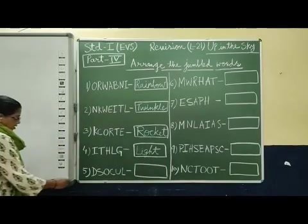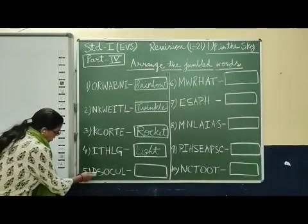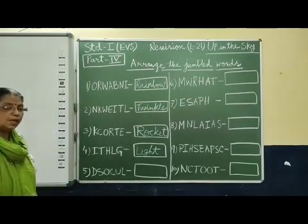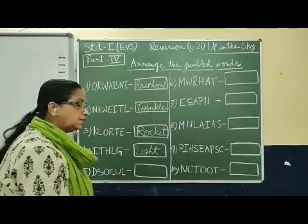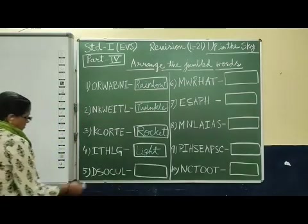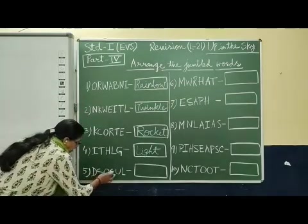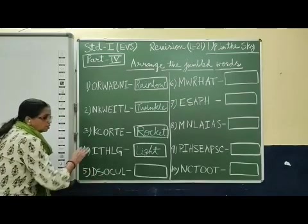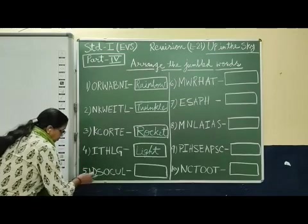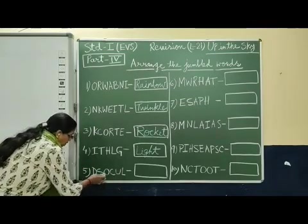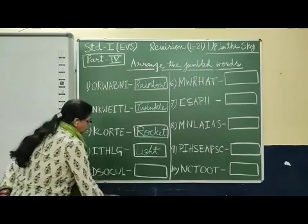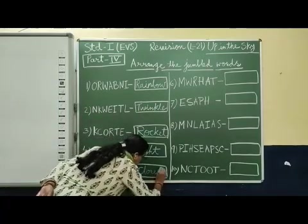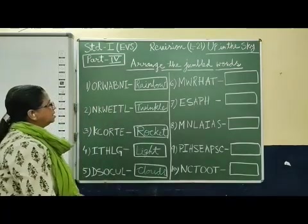Next one: D, S, O, C, U, N. Can you form any meaningful word which you have learned in this chapter? See here: C, L, O, U, D, S — Clouds. Clouds float in the sky. C, L, O, U, D, S — Clouds.